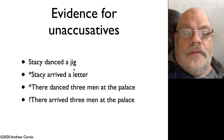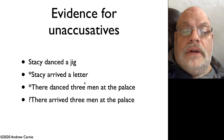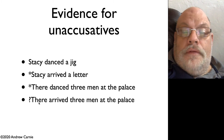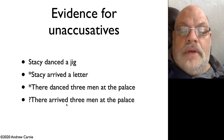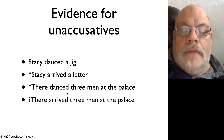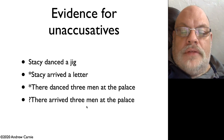Another piece of evidence comes from the phenomenon known as there-inversion. In English, for some dialects but not all, you can create a sentence where you put there in the subject position and put the normal subject in object position — for example: there arrived three men at the palace. This existential there-construction appears to be possible with unaccusative verbs but is ruled out with unergative verbs. This makes sense because effectively what's happening is that the subject noun phrase — like three men — is post-verbal, showing up in its base position.